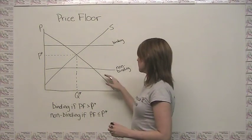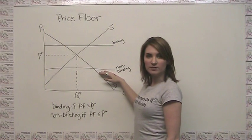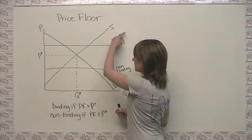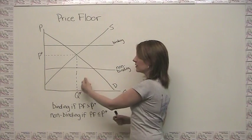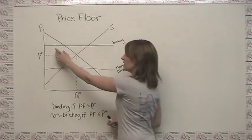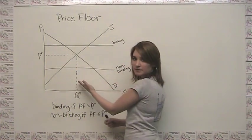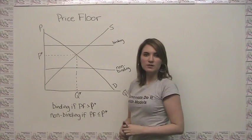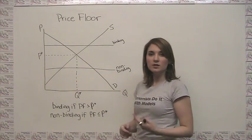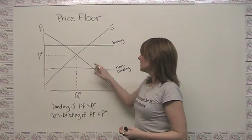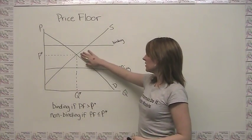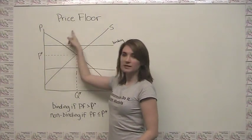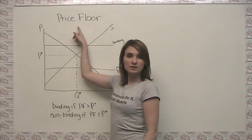For example, a non-binding price floor could become relevant if we saw enough of an increase in supply or enough of a decrease in demand. Similarly, a binding price floor could become non-binding if there was enough of an increase in demand or enough of a decrease in supply.